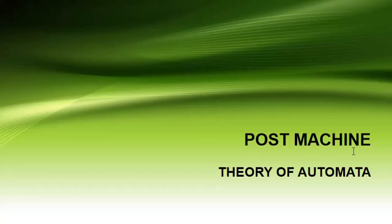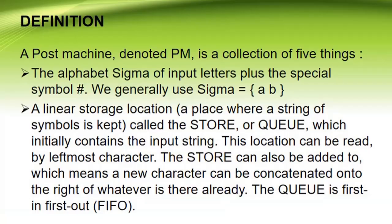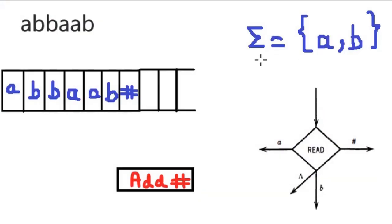A Post Machine, denoted PM, is a collection of 5 things. The first thing is an alphabet sigma of input letters, plus the special symbol hash. Sigma is the collection of symbols which are used to create strings — sigma means many symbols. We use strings and then check them against the Post Machine to determine if they are valid or not.